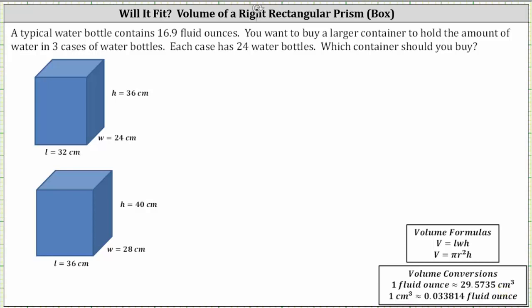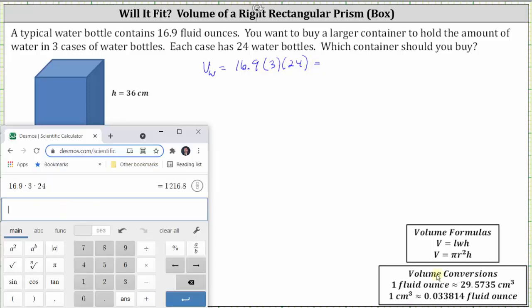Let's call the volume of the water V sub W. V sub W is equal to the amount of water in one water bottle, which is 16.9 fluid ounces, times the number of water bottles, which would be three times 24, since you have three cases of water bottles and each case contains 24 water bottles. This gives us the total volume in fluid ounces, which is 1216.8 fluid ounces.